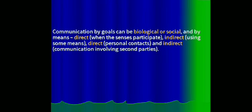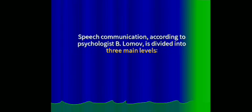Communication by its goals can be biological or social, and by means direct — just the presence of participants — and indirect, using some means, direct personal contacts, and indirect communication through second parties. According to psychologist Lomov, speech communication is divided into three main levels, which we will cover in the further slides.